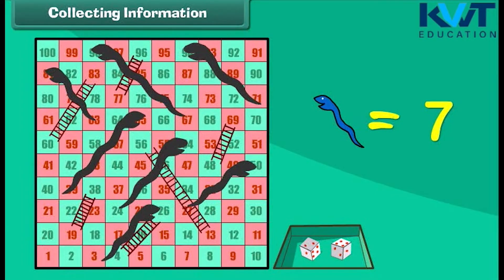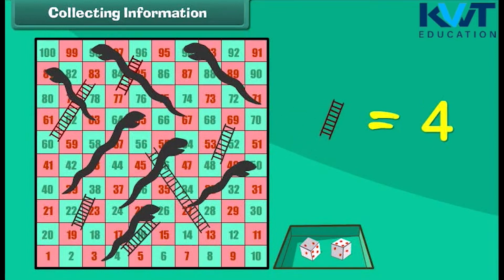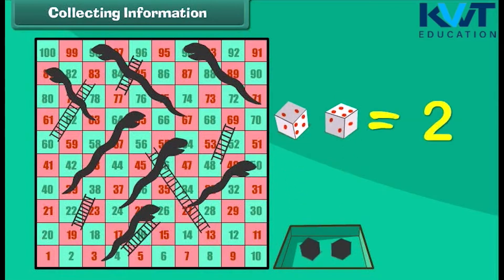There are seven snakes. Now let's count the total number of ladders: one, two, three, four, five, and six. There are six ladders. How many dice do you see here? There are two dice.